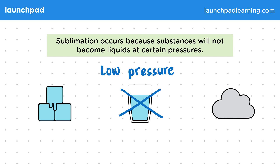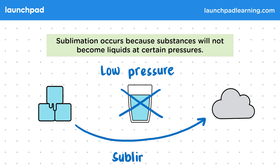You don't need to know why this happens, and you don't need to know the general relation between pressure and changes of state in your exam. But it does mean that sublimation can occur at this pressure, so ice can change directly to vapour.